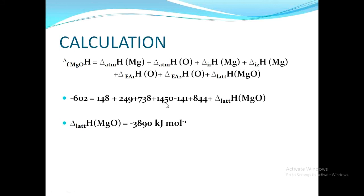The first and second electron affinities of oxygen are given by the examiner. The first electron affinity of oxygen is −141 kJ/mol and the second electron affinity is +844 kJ/mol. By working out and calculating the lattice enthalpy of magnesium oxide, we arrive at a value of −3890 kJ/mol. This calculation part gives you a further two marks, so you can attain nearly eight marks by attempting this question.